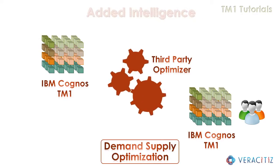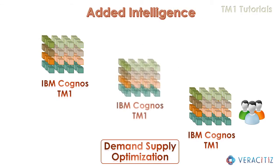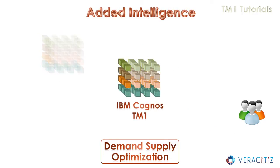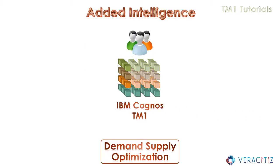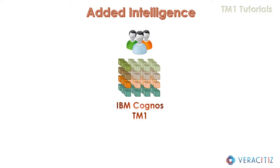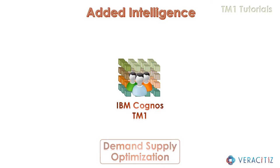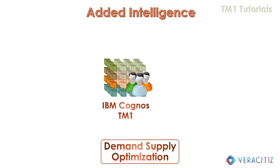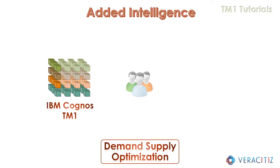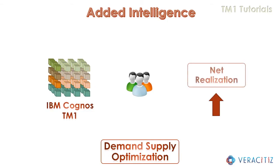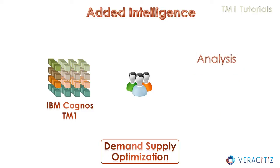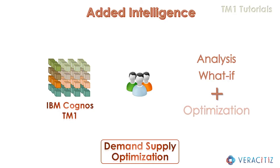However, this elongated process has now been eliminated, thereby improving the overall speed and efficiency. Veracities has now augmented a demand supply optimization feature in TM1, which will enable the user to optimize net realization in real-time. TM1, in addition to analysis and what-if, will now impart greater intelligence by getting equipped with optimization, which is of utmost need in every industry.